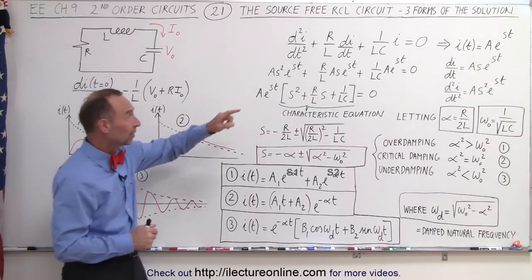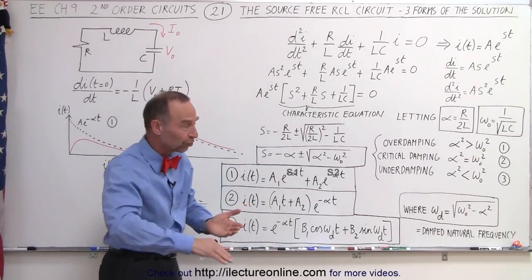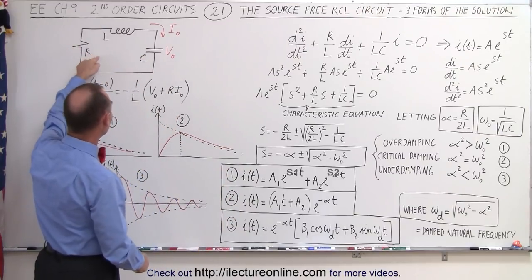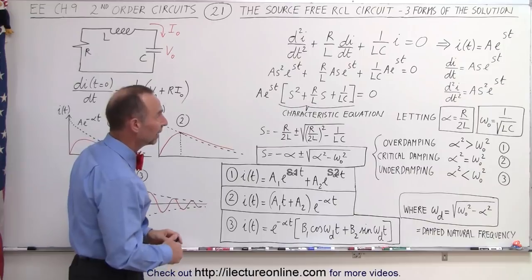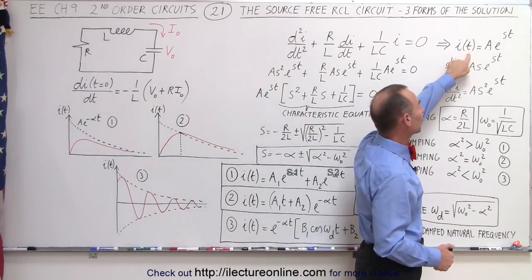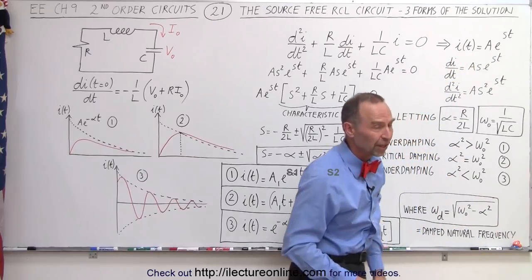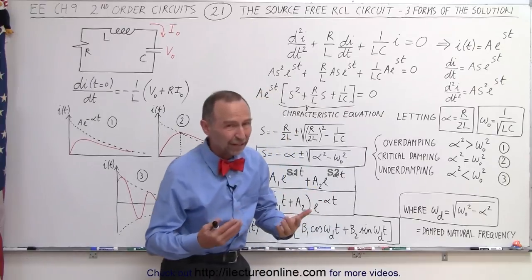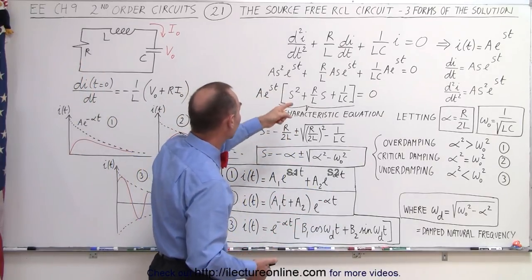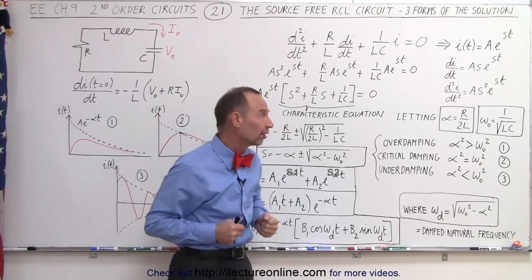We started with a differential equation derived from summing up the voltages all the way around the circuit. We have a basic RCL circuit with a resistor, an inductor, and a capacitor. We're looking for a solution where we can find the current as a function of time in this form: some constant times e to the st. The s is going to be a negative quantity because we expect the current to be diminishing, especially since there is a resistor in the circuit that will take some energy out.